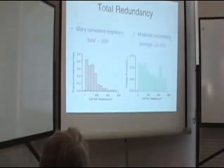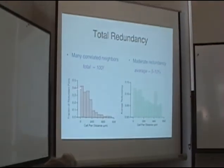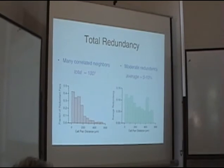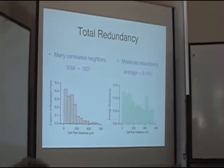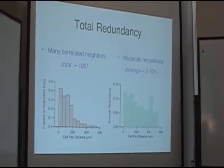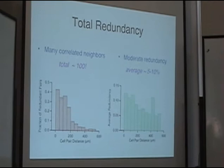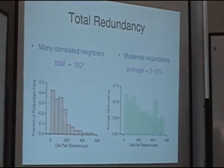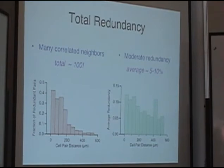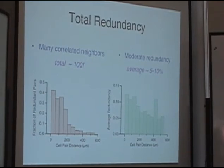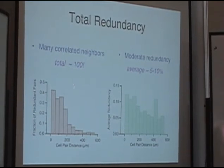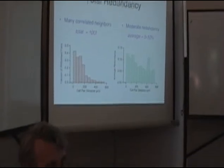So if you're looking at a neighbor that's right on top of you, there's a little more than 40% chance that that neighbor shares redundancy with you. That's pretty high. It drops off at around 200-250 microns away. And if you just add up how many correlated neighbors you have, it's about a hundred — one ganglion cell shares significant correlation with a hundred other ganglion cells in its vicinity.